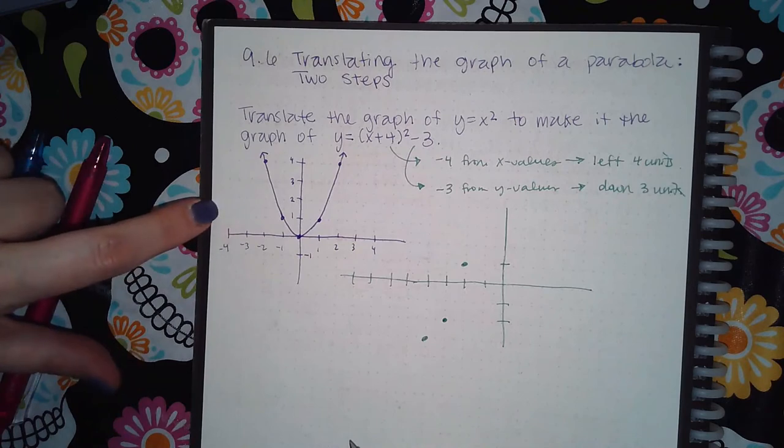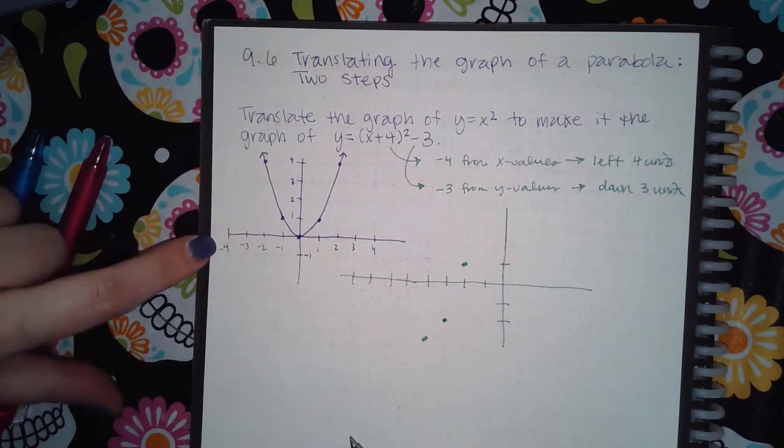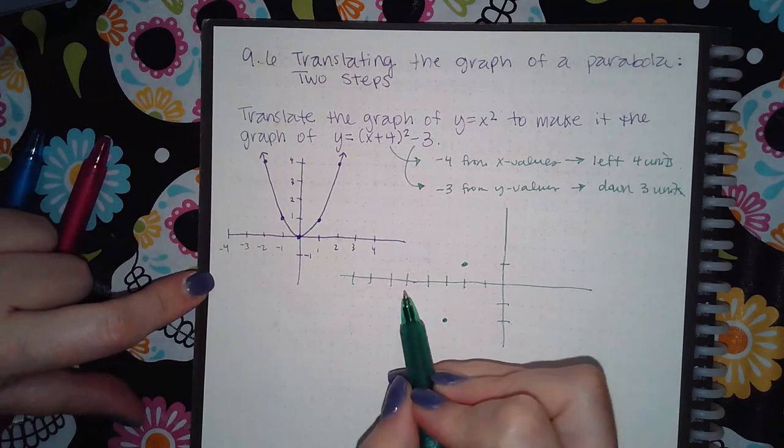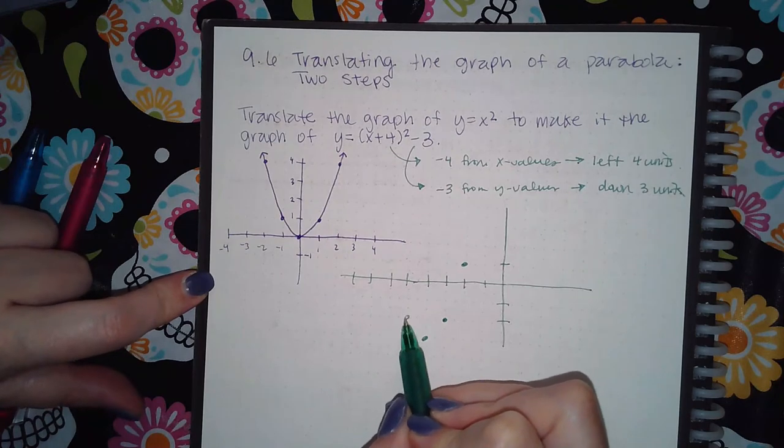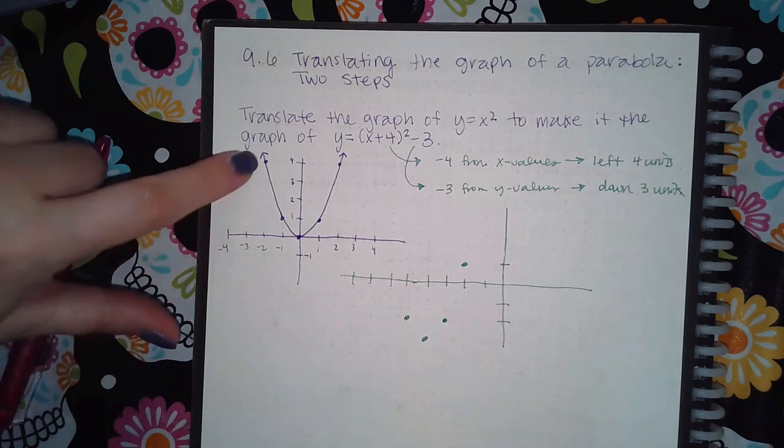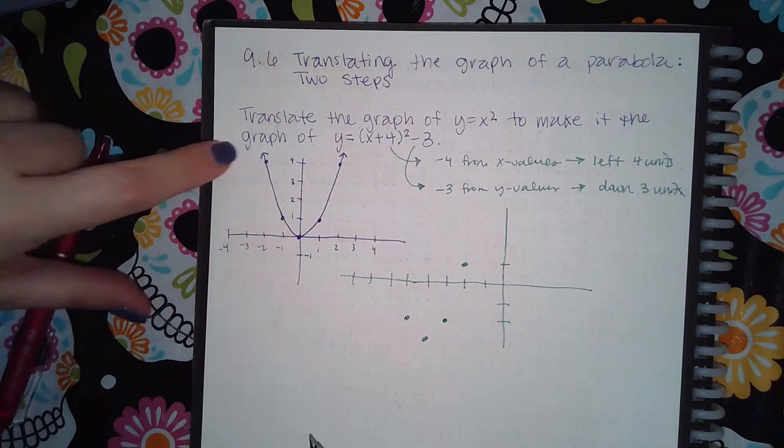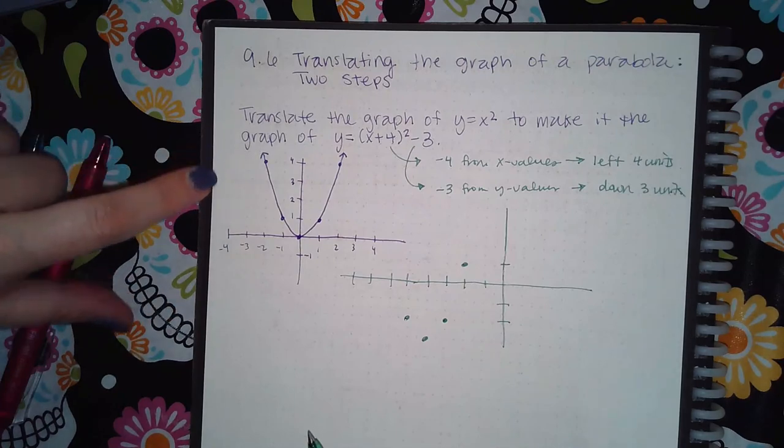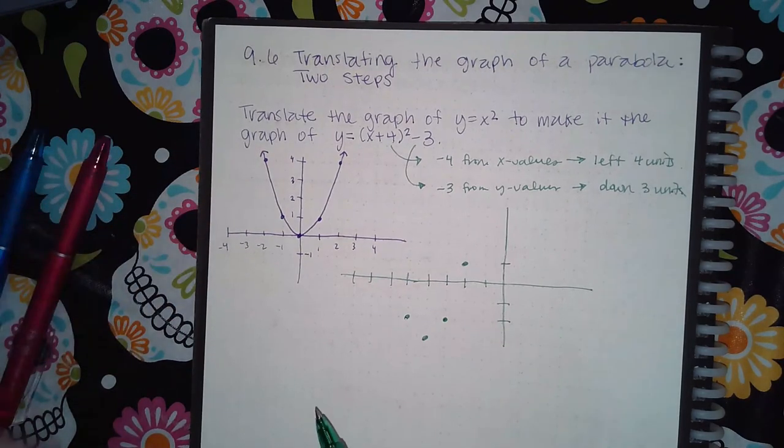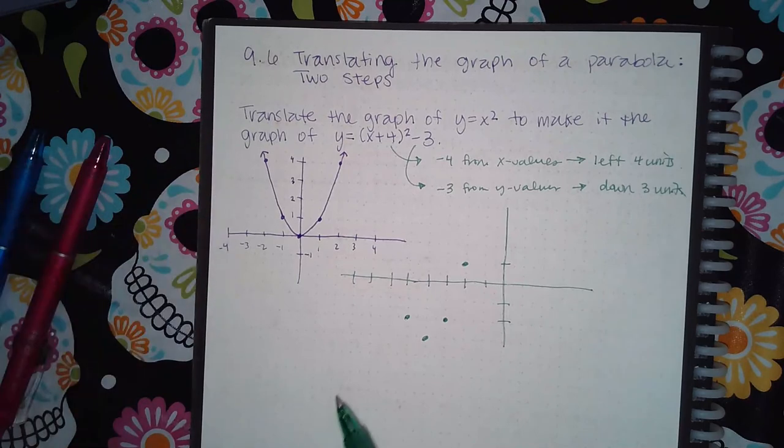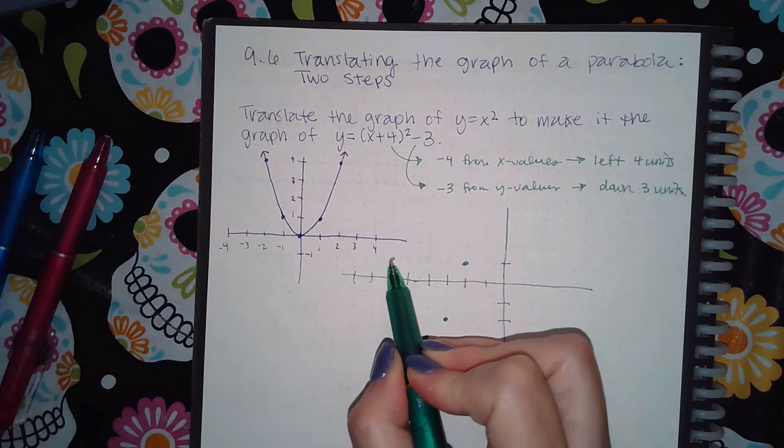And then down 3, so that puts me at negative 2. And then the last one, negative 2 and 4, will go all the way to negative 6, and then down 3, so down to positive 1. So negative 6 and positive 1.